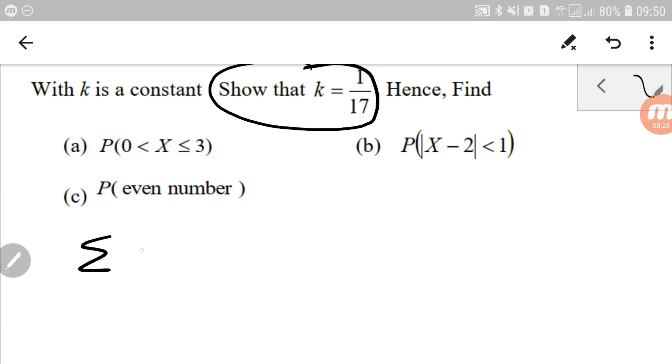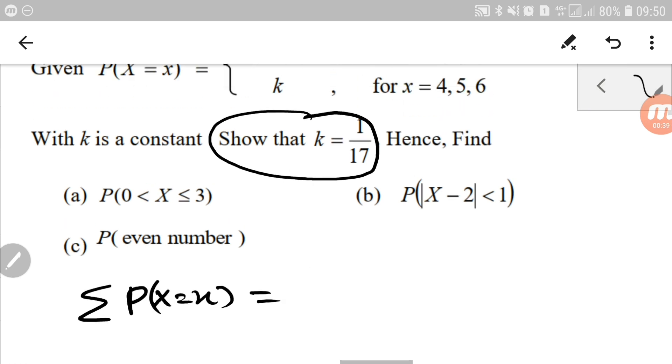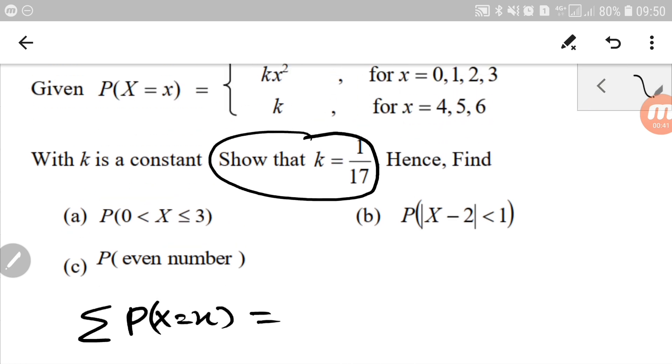the probability of all events must add up to 1. So let's find the sum of all of it.